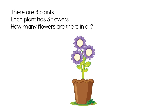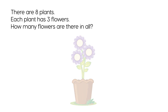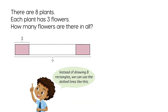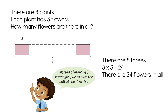There are eight plants. Each plant has three flowers. How many flowers are there in all? There are eight threes. Eight times three equals 24. There are 24 flowers in all.